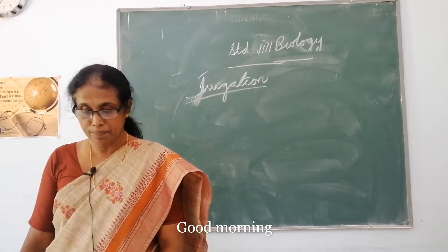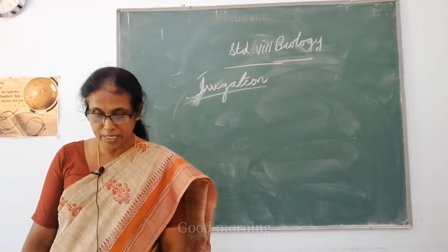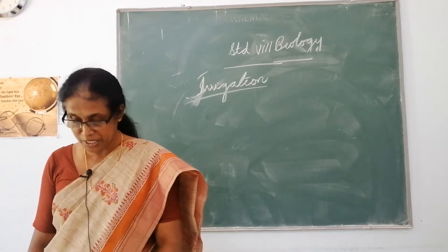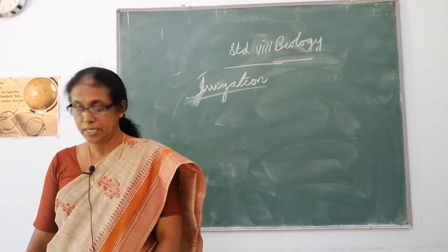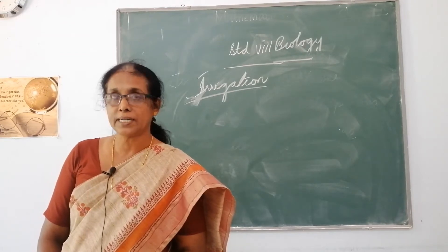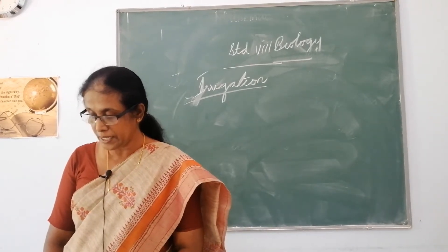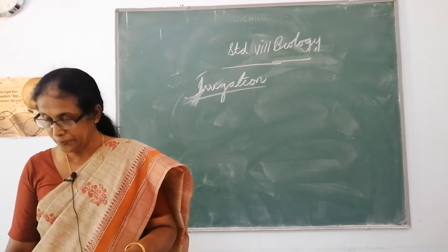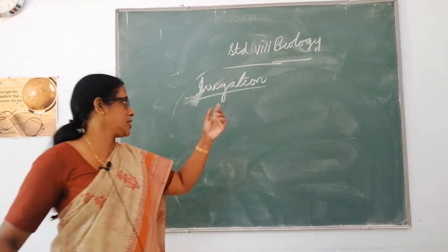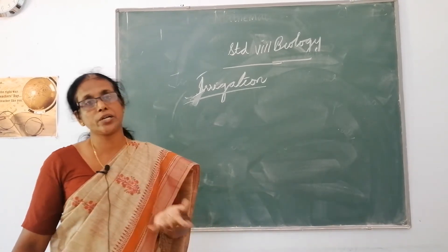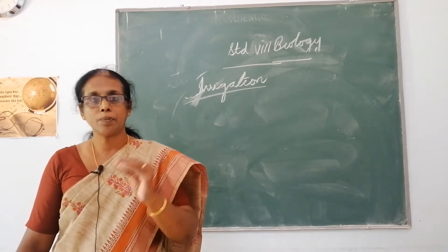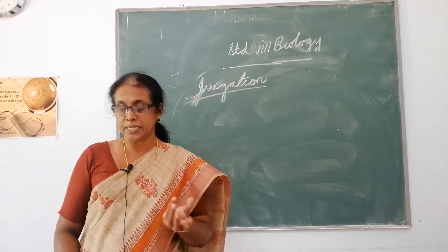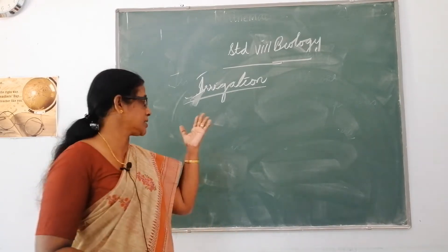We were studying about the basic agricultural practices. The next topic is irrigation. Irrigation means the supply of water to the crops at regular intervals. So when you are planting in your home and pouring water, that is irrigation.